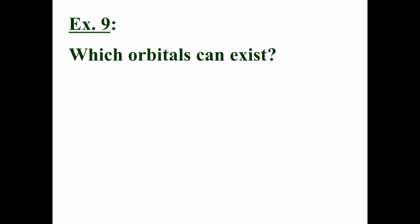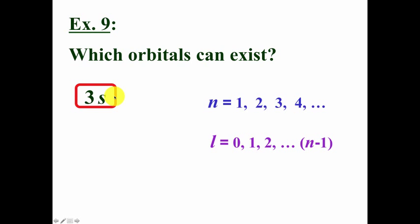Which of the following orbitals can exist? Is it possible to have a three S orbital and why? Well, sure. If N equals three, then L can equal zero or one or two. L equals zero corresponds to S. So three S is certainly possible.